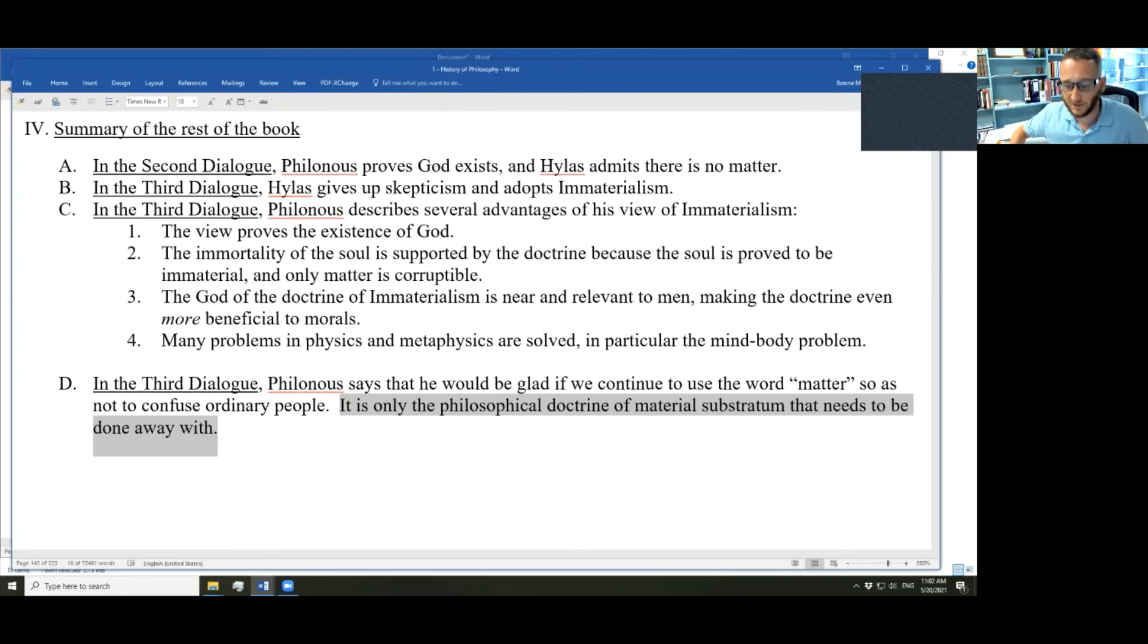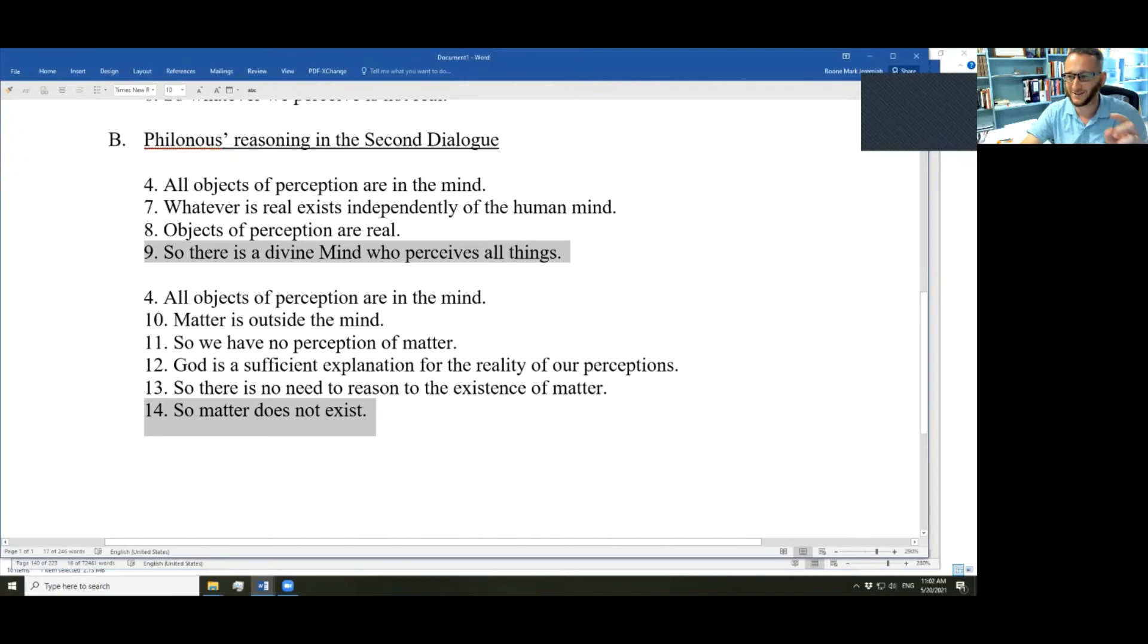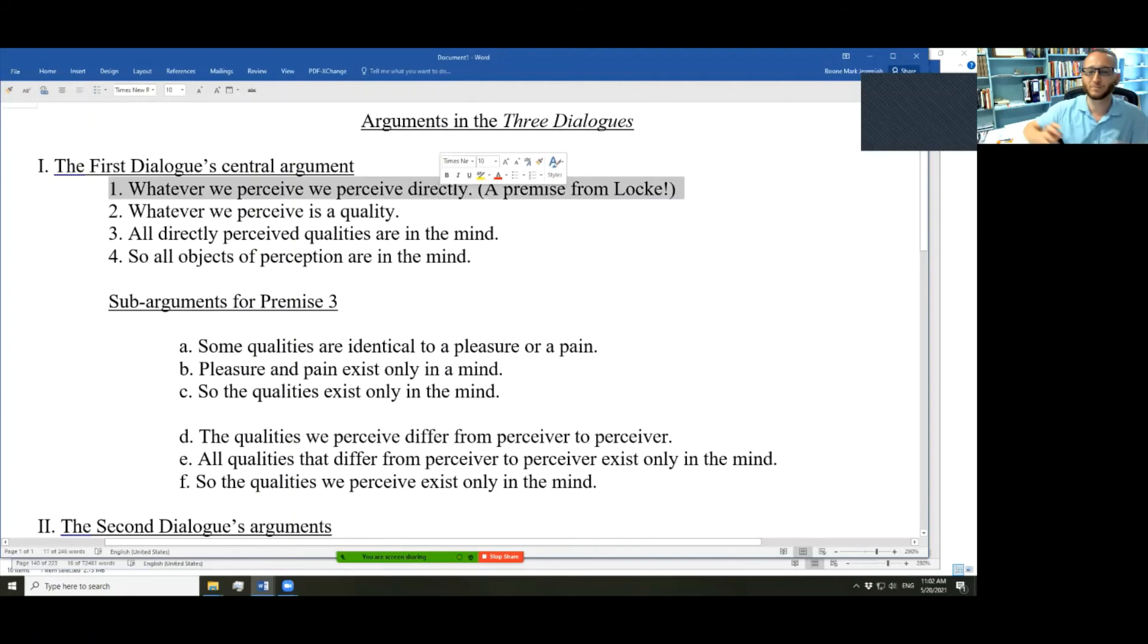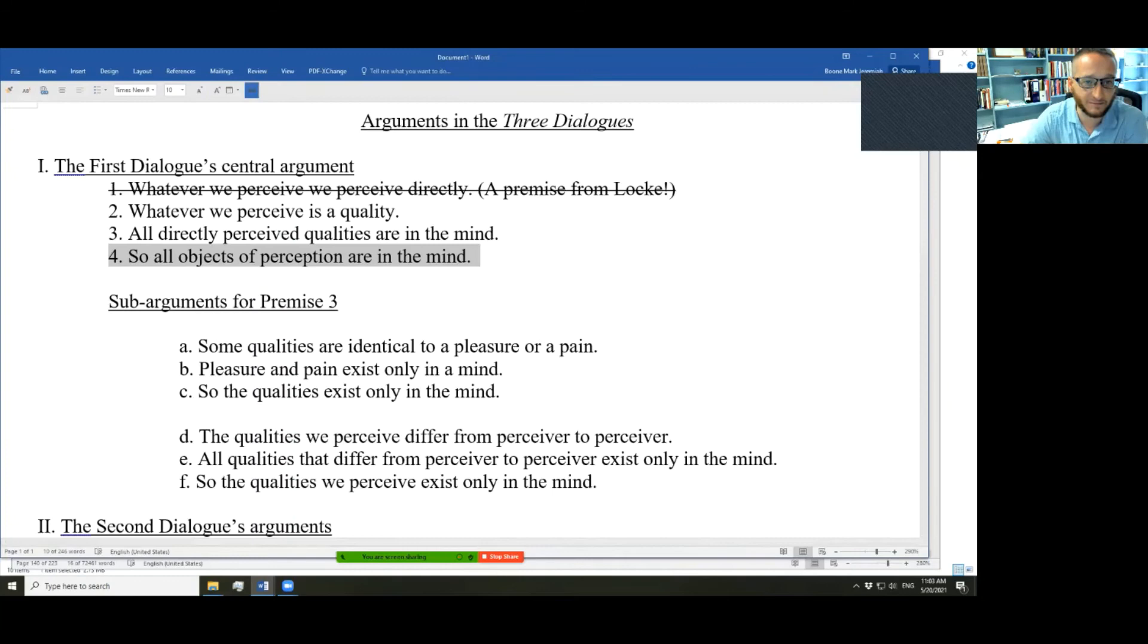But, you know, as far as the argument goes, step back from the context and look at the argument. Analyze the argument. Now, let's do that now. In fact, this will also involve some context. This premise, whatever we perceive we perceive directly, that premise is also from Locke. So, Berkeley is taking one thing from Locke, this premise. And he's using it to undermine Locke's idea of a material substratum as matter. Well, there's an alternative. You know what you can do? You can ditch this premise. And then, none of the other conclusions follow. Cut this one.